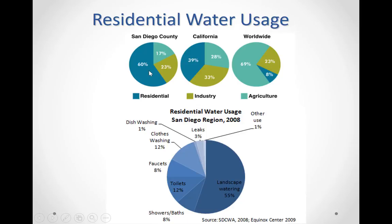Moving to southern California — a much drier region — San Diego County is a clear example. There, 60 percent of water is used in residential homes, only 17 percent for agriculture, and 23 percent by industry. San Diego County, compared to the globe, has a very different pattern of residential water usage.